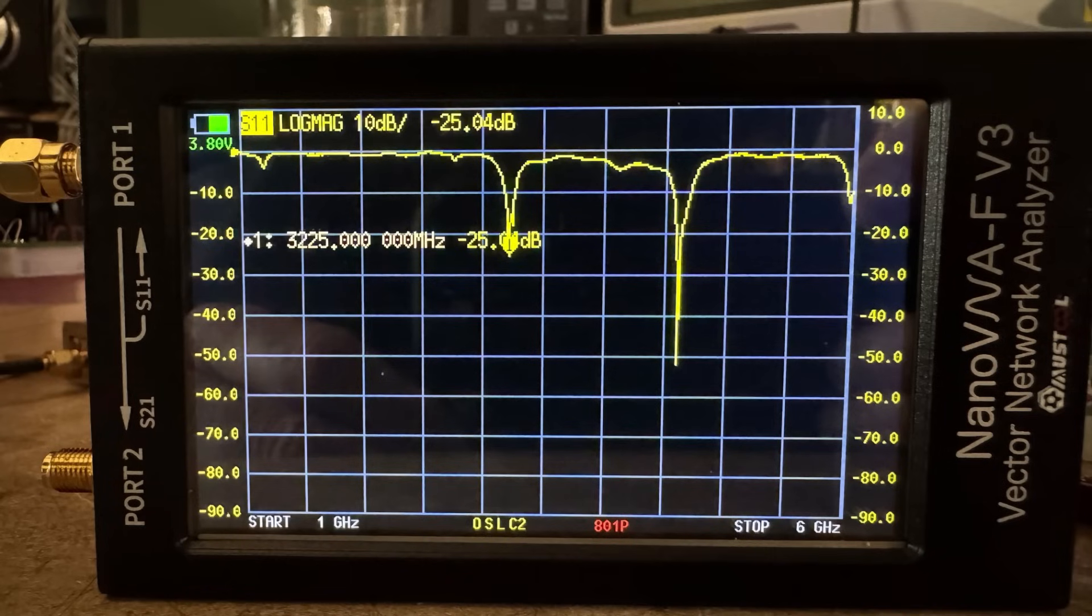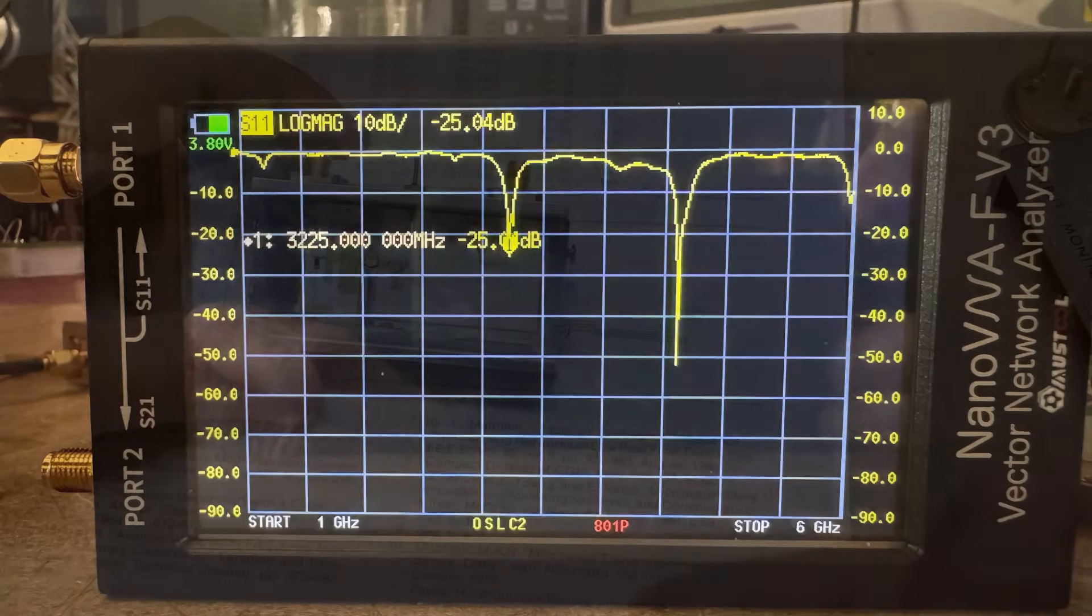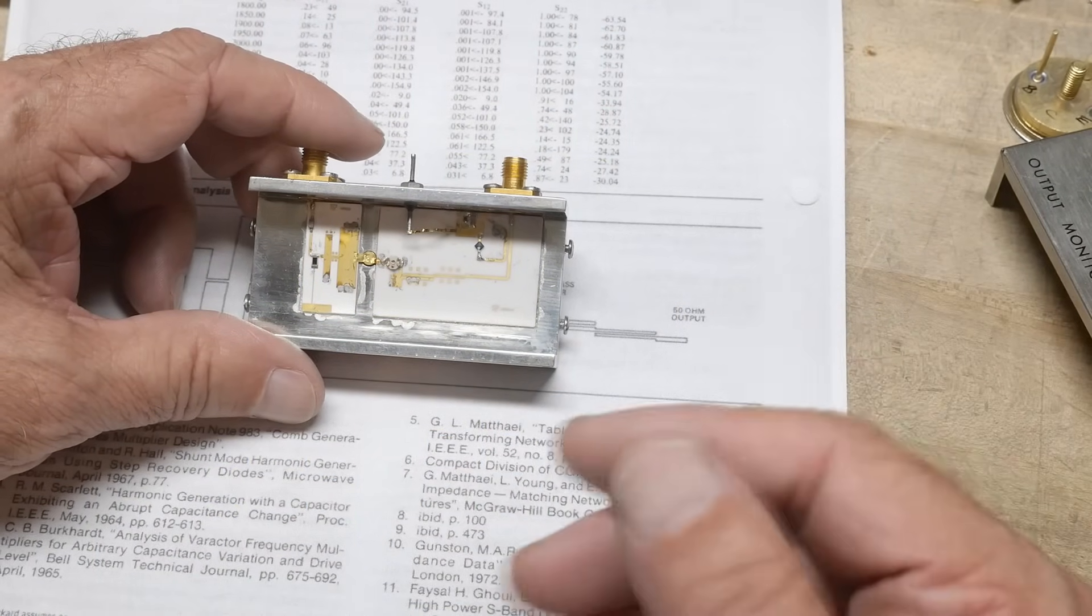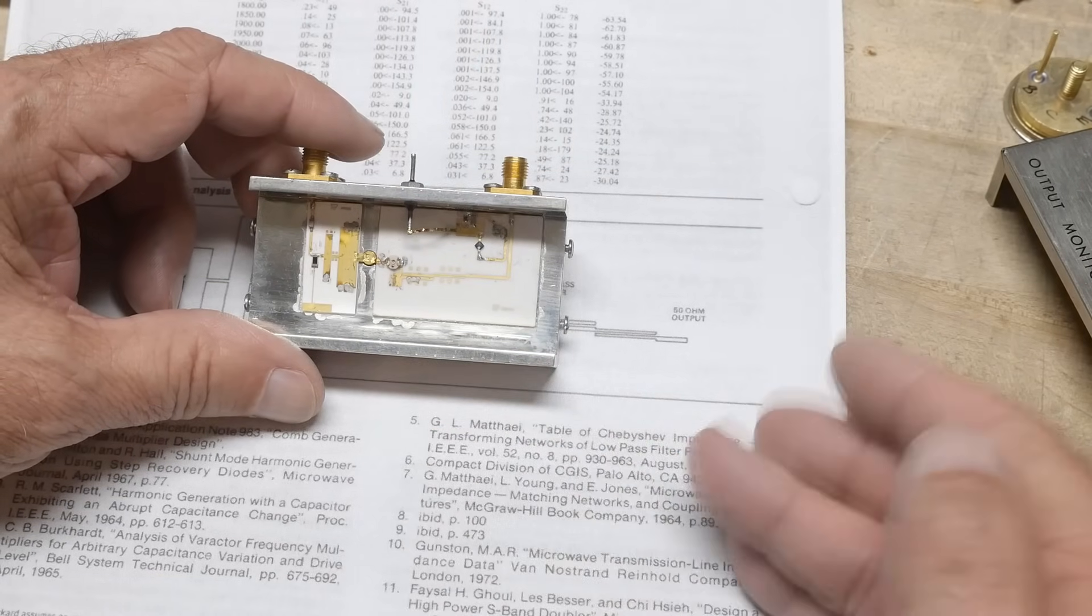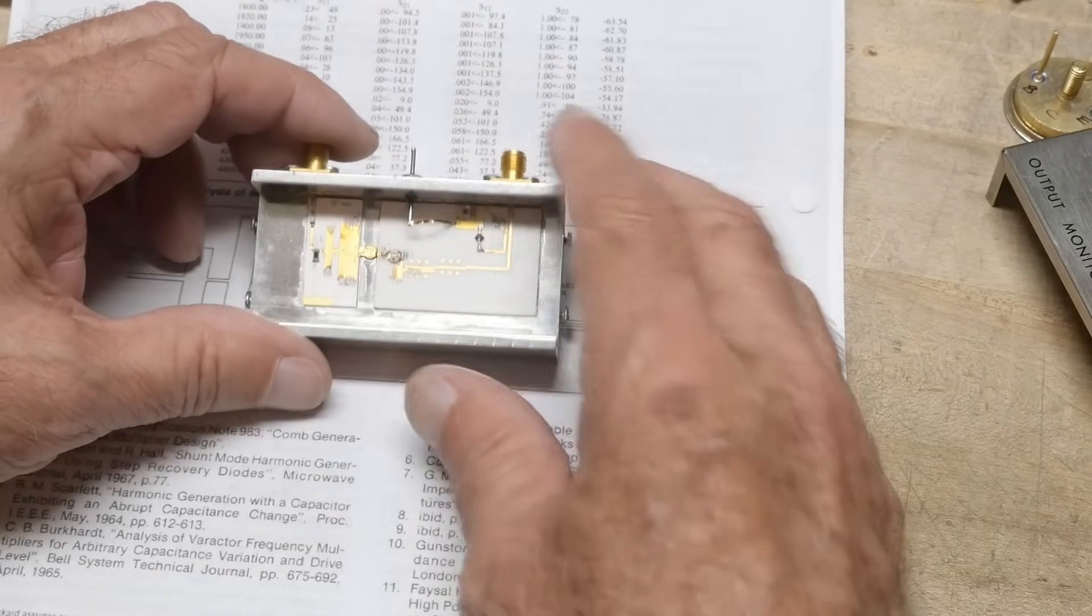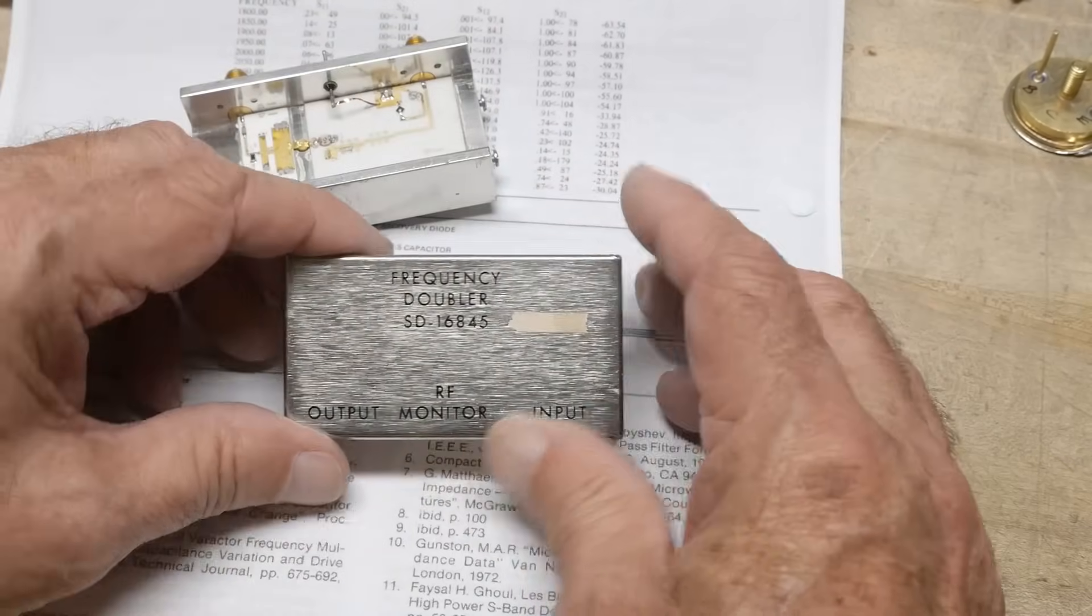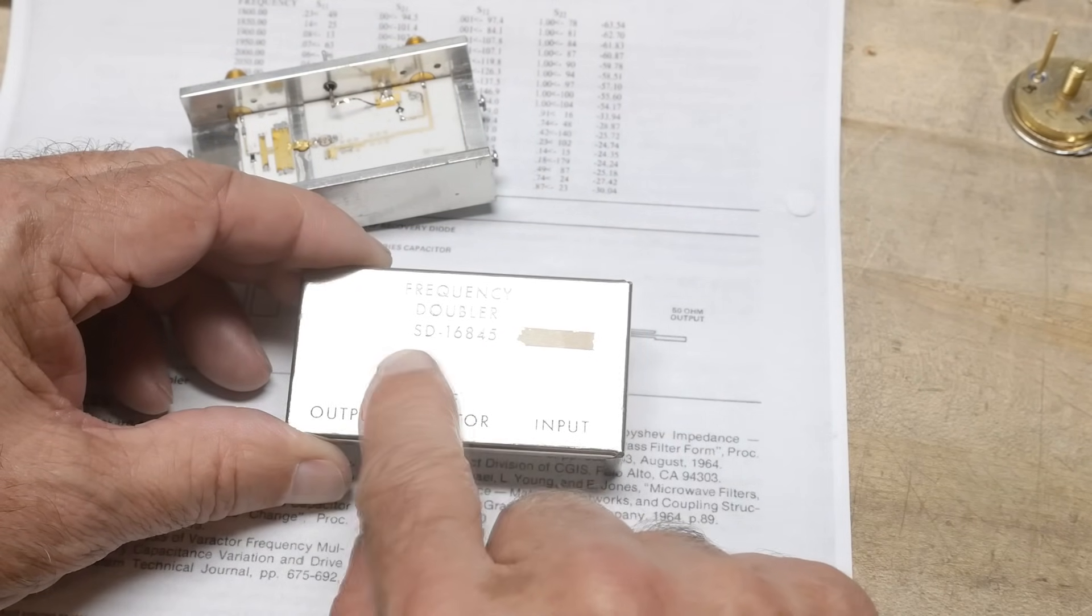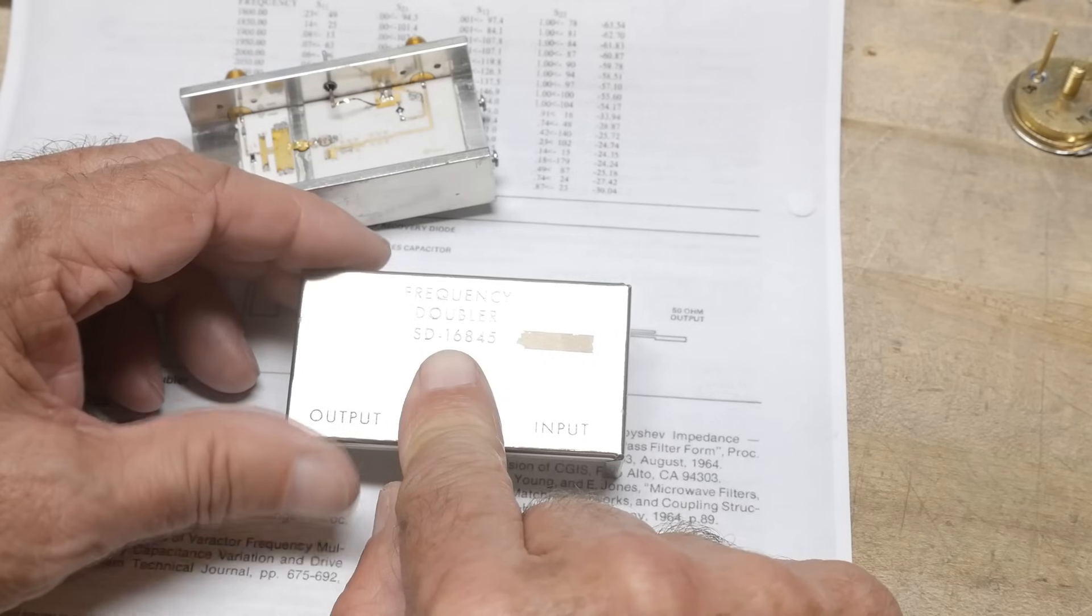But if you look at 3.225 and you divide it by, you know, 3.2 and divide it by two, you get 1.6. So 1.6 input, 3.2 output. And if you look at the part number on this thing, it's 1.6845. So it's the 1.6 gigahertz.